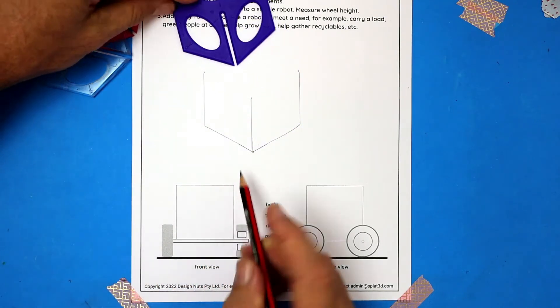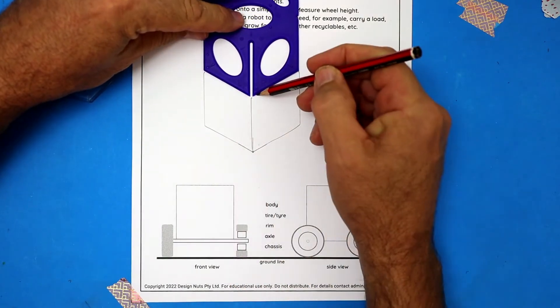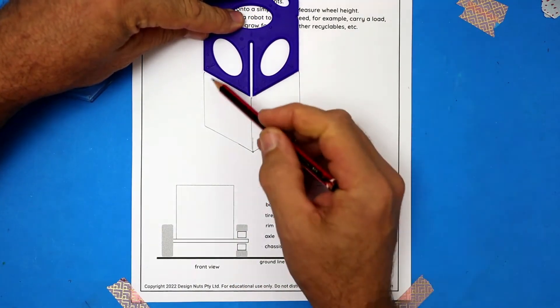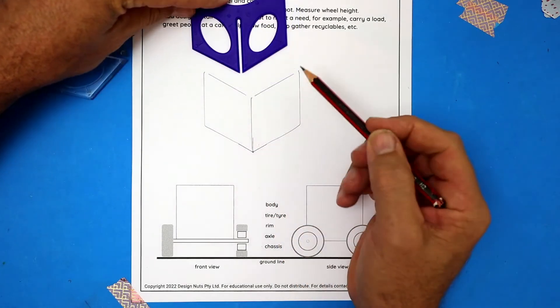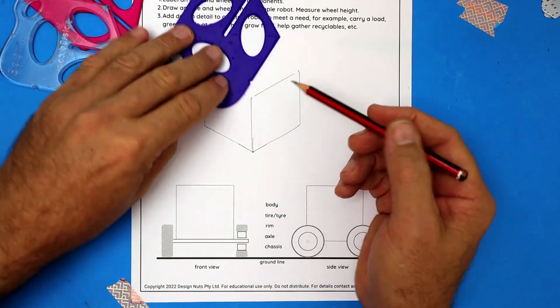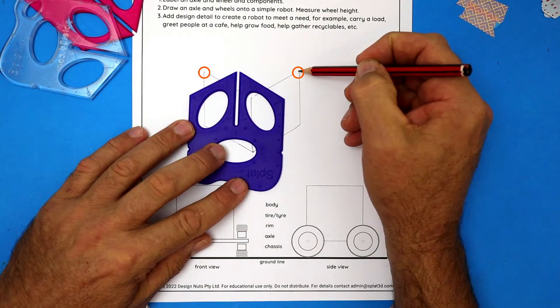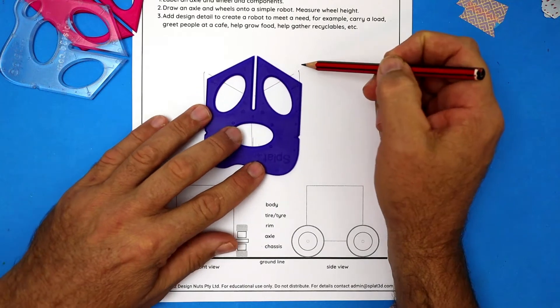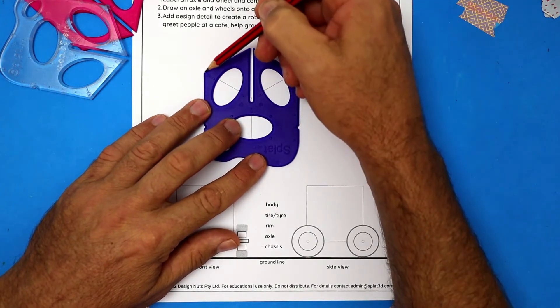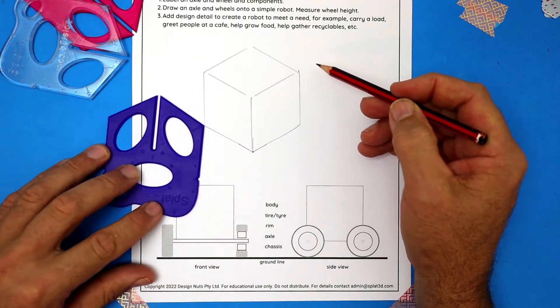Put the splat on the end of that line, right there, and draw in two more edges. Now for the far two edges we're going to rotate the splat. We're lining up these two marks on the drawing with these two corners on the splat. When they're matching, draw in your far two edges. That's the cube complete. Well done.